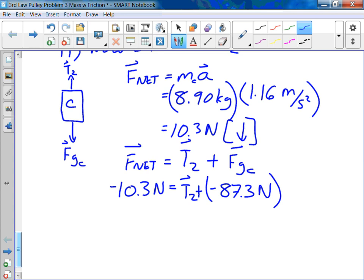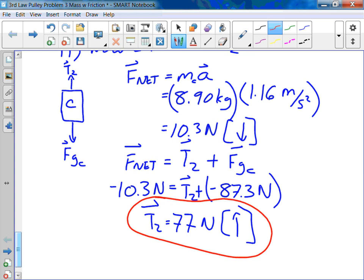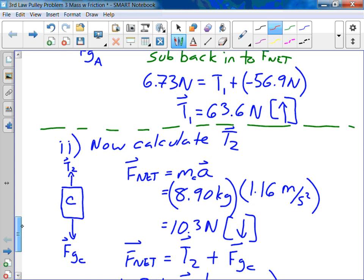And that's going to be negative 87.3 because that's down. So that ends up working out to, is that wrong? 77. Yeah, of course. There's our two answers.